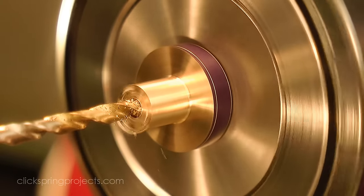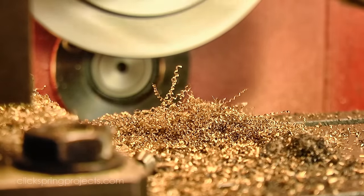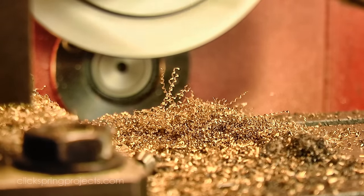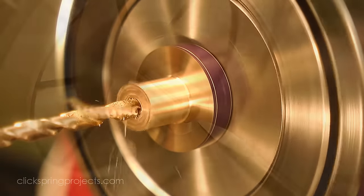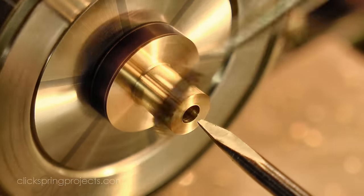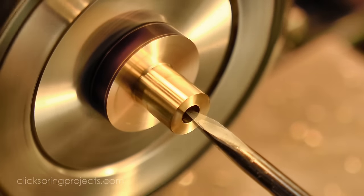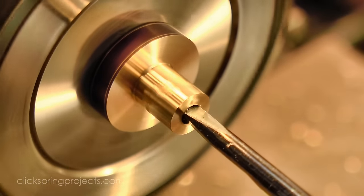The hole to be reamed is drilled slightly undersized as normal, so that the reamer has something to cut. In this case, I'm drilling 2.3mm to ream 2.46mm. And then the reamer simply follows the drilled hole at a moderate RPM with a little cutting fluid.